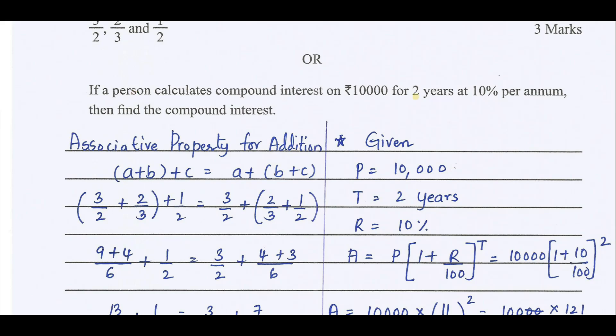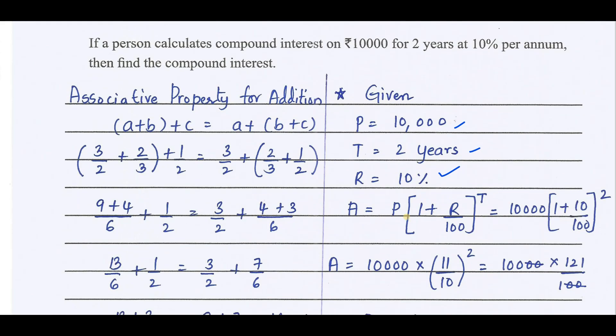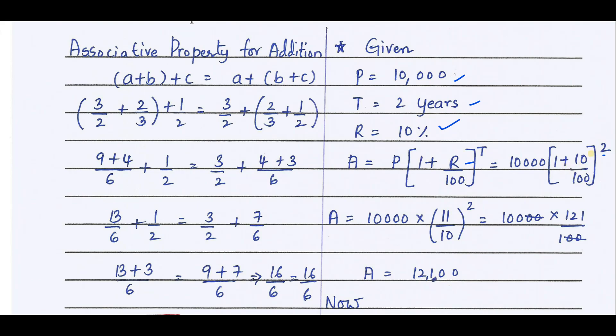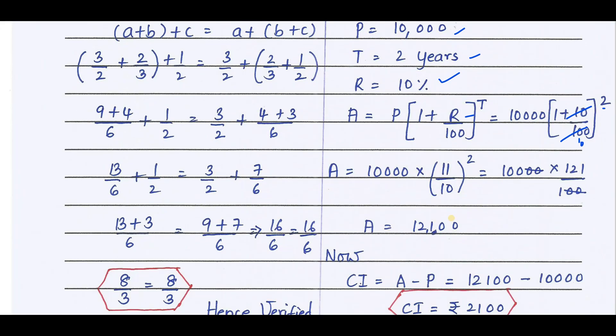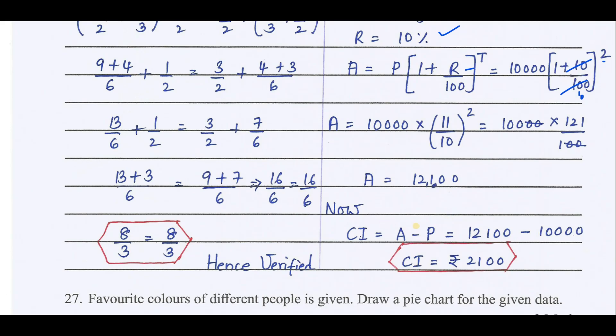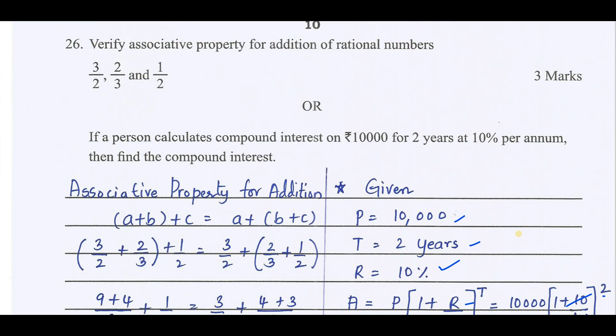If a person calculates compound interest on Rs. 10,000 for 2 years at 10% per annum, what is the compound interest? Principal amount is 10,000. Time is 2 years. Rate of interest is 10%. Amount equals P(1 + R/100) to the power T. Time is 2, rate of interest is 10. What we get is 11/10 whole square. 11 square is 121, 10 square is 100. What we get is 12,100. Now, compound interest equals amount minus principal. What we get is 2,100 is the compound interest.